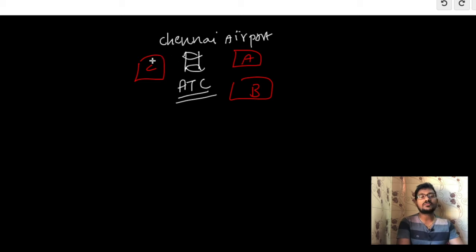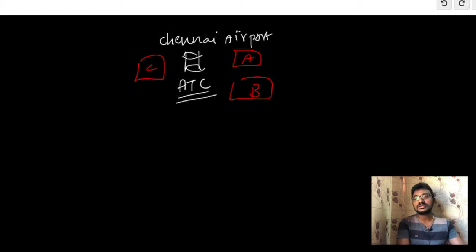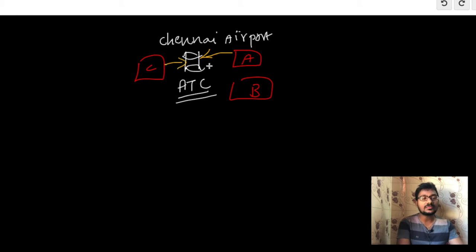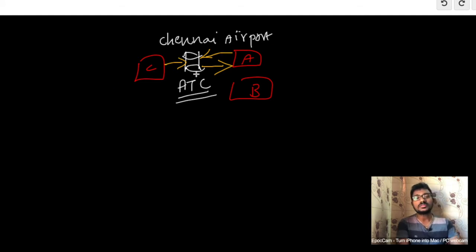If A needs to communicate with C, there won't be any direct communication facilities between them. So what A does is communicate with the ATC, and then the ATC gets the information from C and gives it back to A. So the ATC is acting as a mediator — interconnecting all the planes, gathering information, and delivering it to the required plane. This is the real-life example where the mediator design pattern plays a major role.